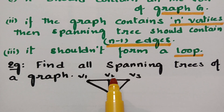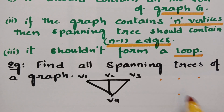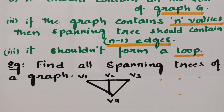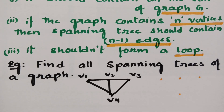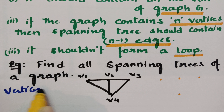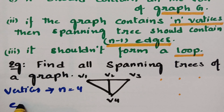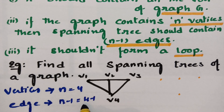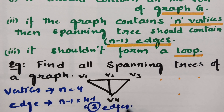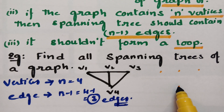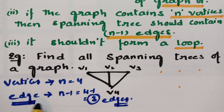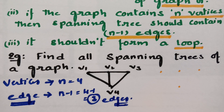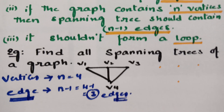Observing this graph, it has vertices V1, V2, V3, and V4 — so there are 4 vertices. In our spanning tree, it must also contain 4 vertices. Here n equals 4, so the spanning tree should contain n minus 1 edges, which is 4 minus 1 equals 3 edges. We must maintain three edges for each spanning tree, keep all four vertices, and ensure no loops are formed.